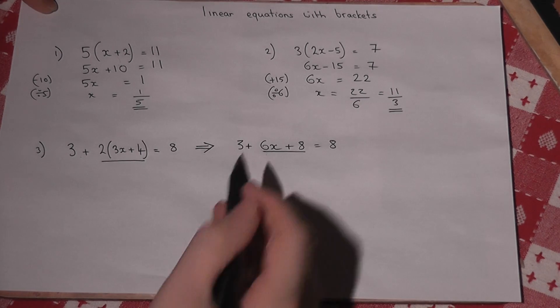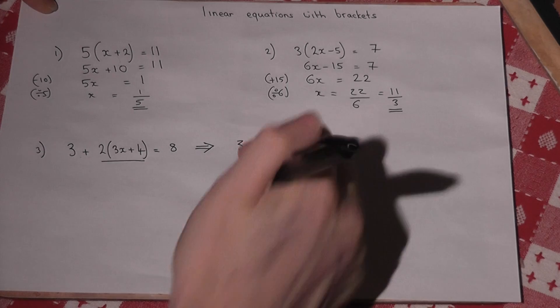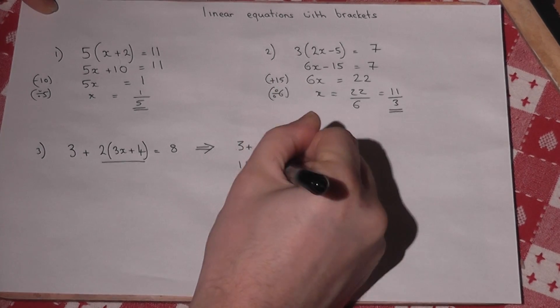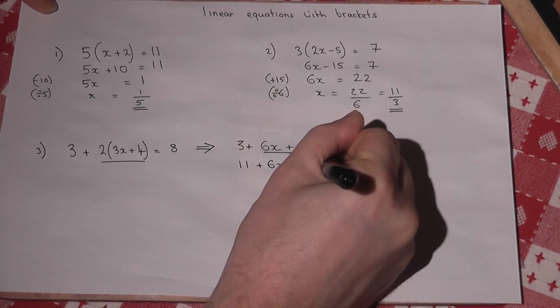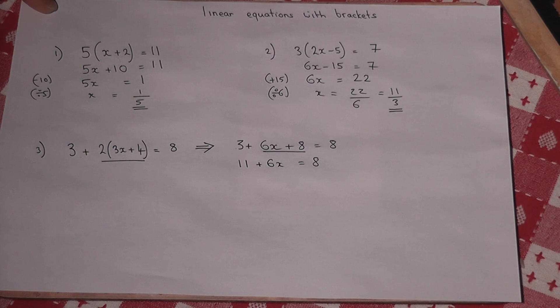The next step is to simplify. 3 plus 8 is 11. So 11 plus 6x equals 8. And we then solve the equation as normal.